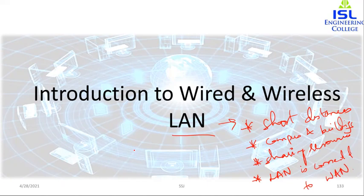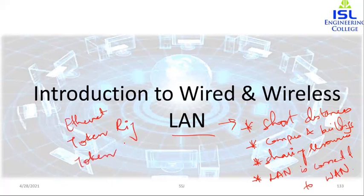The technologies used for creating a local area network are Ethernet, token ring, token bus, ATM LAN, etc. The most common one used is Ethernet. Ethernet is basically a traditional technology for connecting devices in the local area network or even in the wide area network. It was first introduced around the 1980s, and we will be studying that in detail.